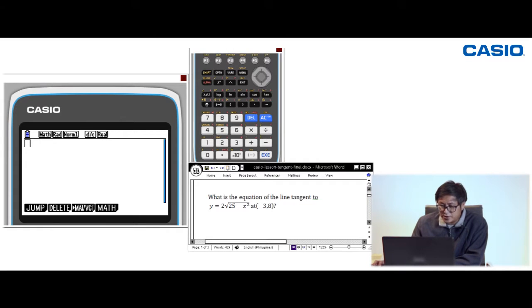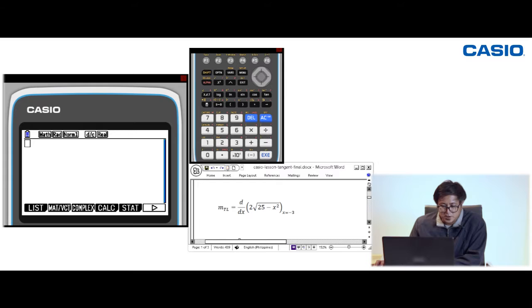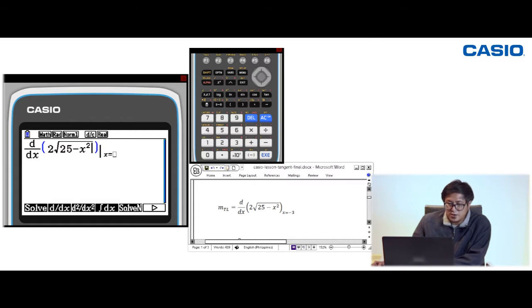To evaluate the slope at (-3, 8) using the formula, input d/dx of 2√(25 - x²) at x = -3. Press Option, then see Calc here. The button to use is F4, then d/dx is F2. d/dx will appear on the screen. Input the expression: 2, Shift, square root, 25 minus x squared. Use the arrow keys to go to the empty slot for x value, input -3, and press EXE to execute the operation. We'll get 1.5.